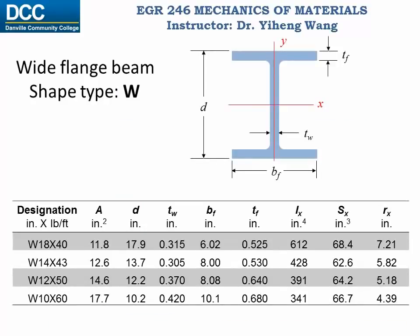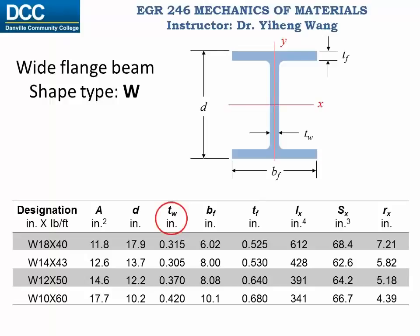In this table I am showing a very small sample from the database. The data listed here are all in US customary units, but data in SI units are also available. The first column is the designation of the shape — W indicates a wide flange beam, the number 18 is the total depth in inches, and 40 is the nominal weight of 40 pounds per foot. The other columns include total cross-sectional area, total depth, width of the web, width of the flange, thickness of the flange, area moment of inertia about the x-axis, section modulus about the x-axis, and radius of gyration about the x-axis.